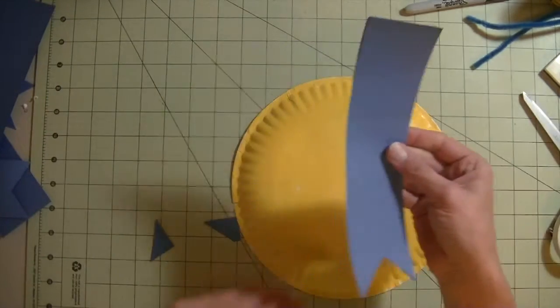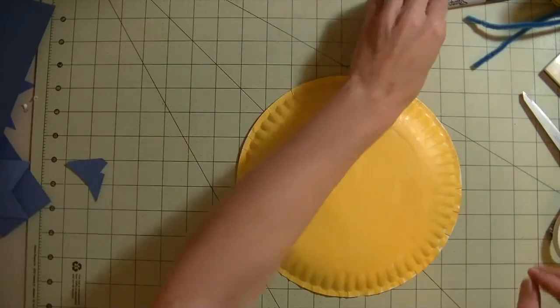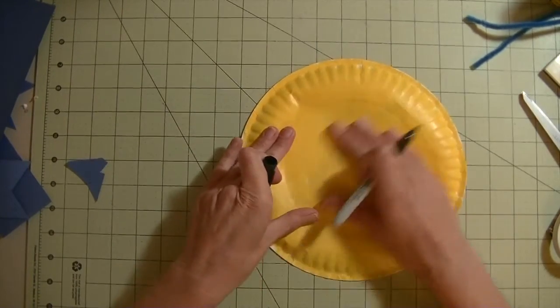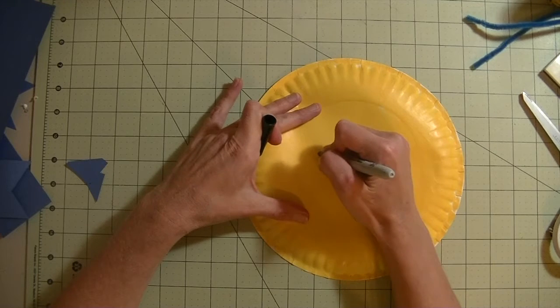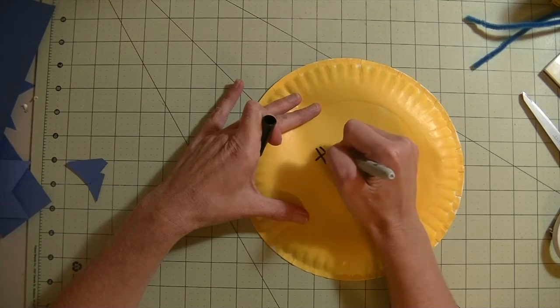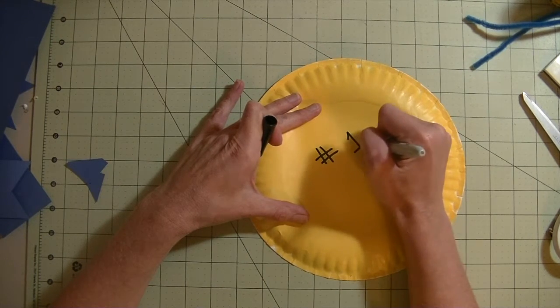Okay, so now we have our ribbon. I'm going to take a marker and write - let's push my plate a little bit - just with any kind of marker, I'm going to write in number one dad.